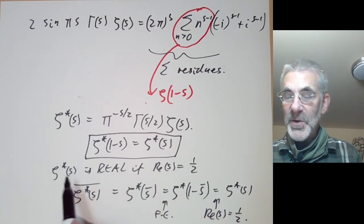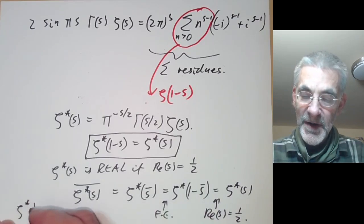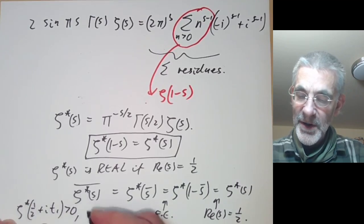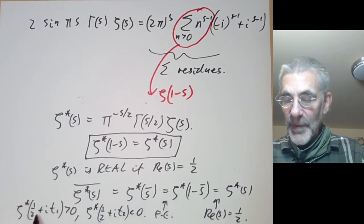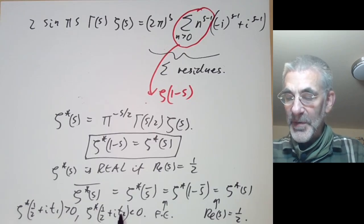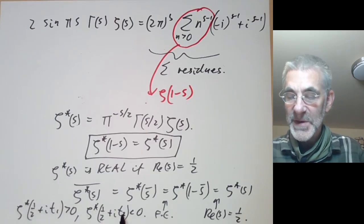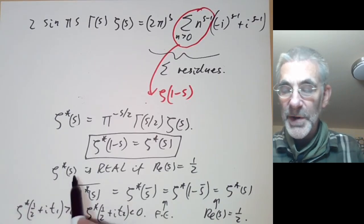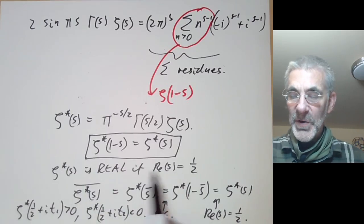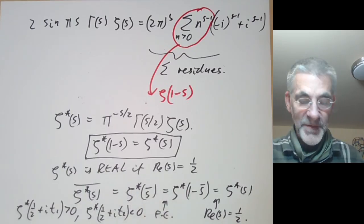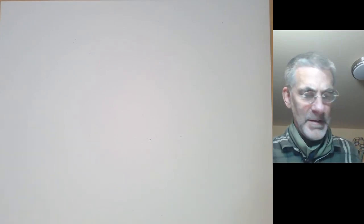This is very nice because it means you can prove that zeta star vanishes at certain points on the critical line. If zeta star(1/2 + it₁) is greater than zero and zeta star(1/2 + it₂) is less than zero, then by continuity there must be a zero between t₁ and t₂. Riemann found such values, proving at least one zero on the critical line — in fact he found three — and conjectured all non-trivial zeros lie on the critical line. This is the Riemann Hypothesis, the world's most notorious unsolved problem in mathematics.